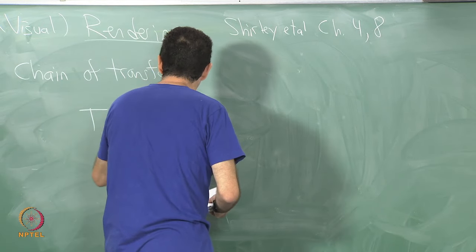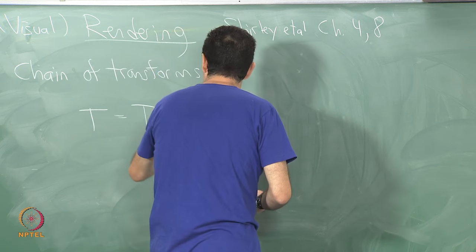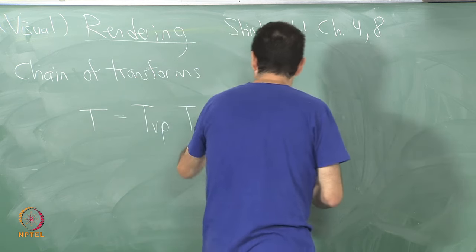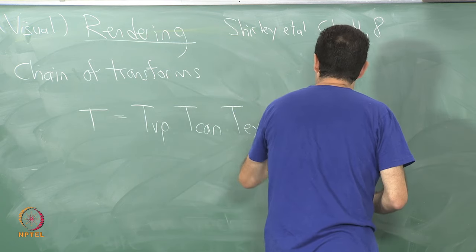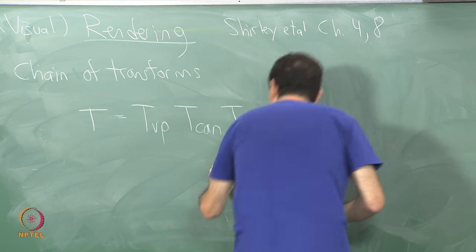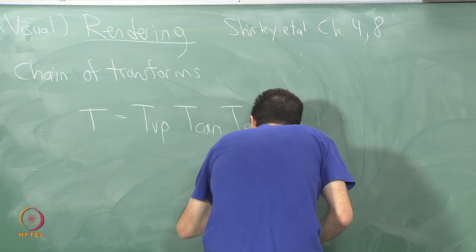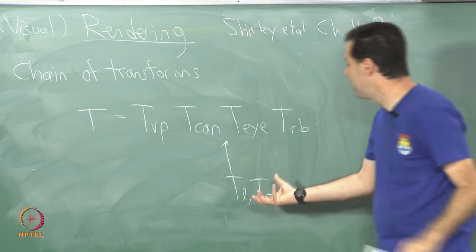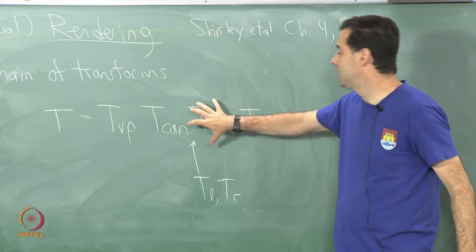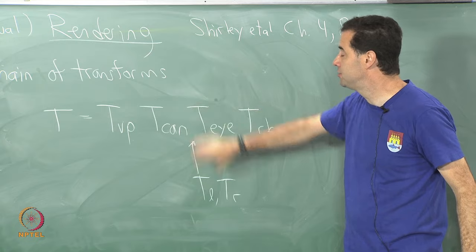Is equal to t viewport, t canonical view, t i, and t rigid body. And I went through all these transformations in detail. I even inserted for stereo t left and t right in here, or I might have combined them into making right eye and left eye transformations here by replacing this matrix.